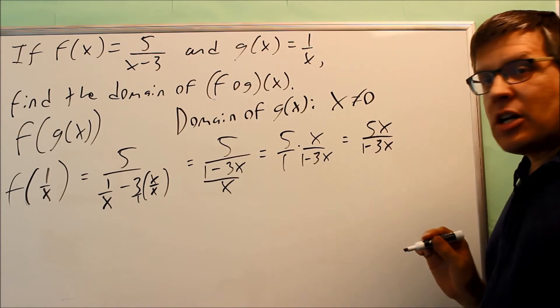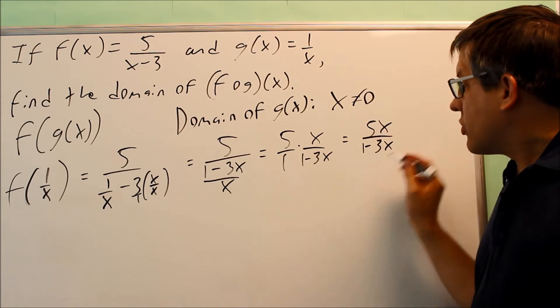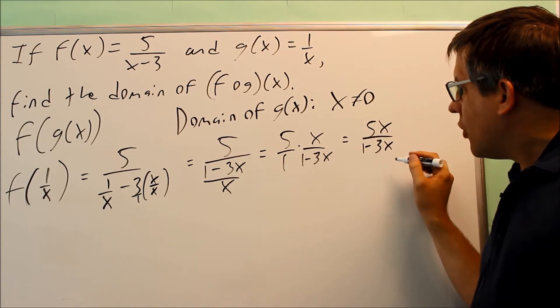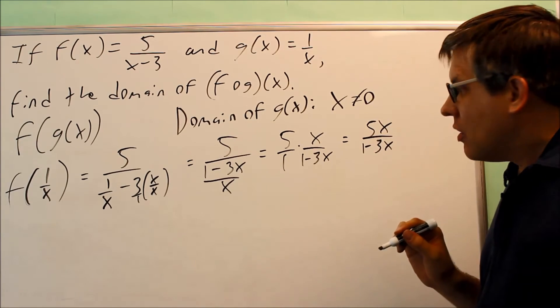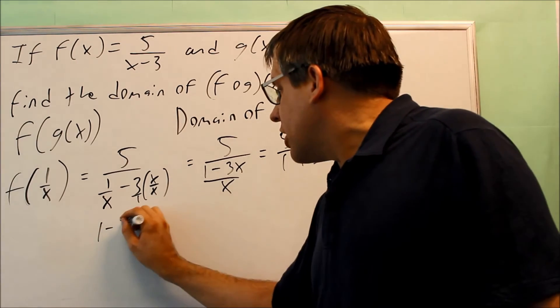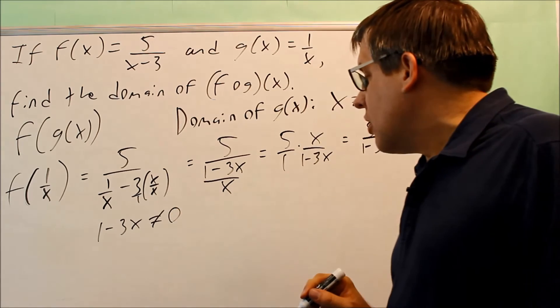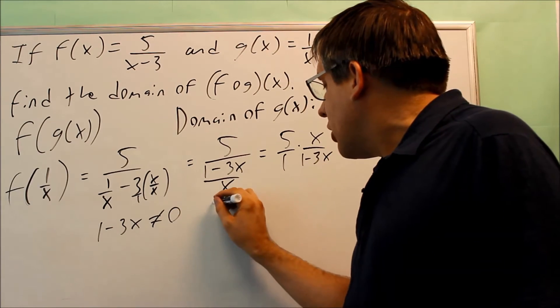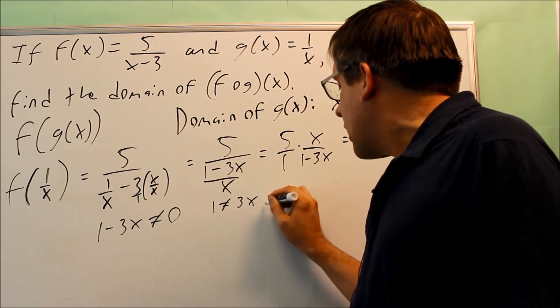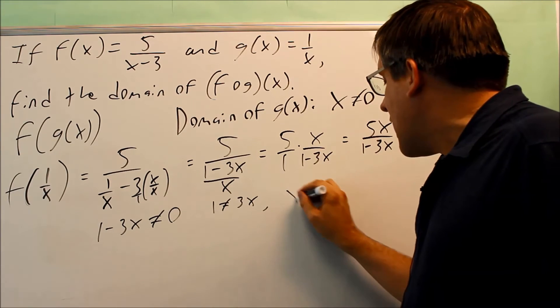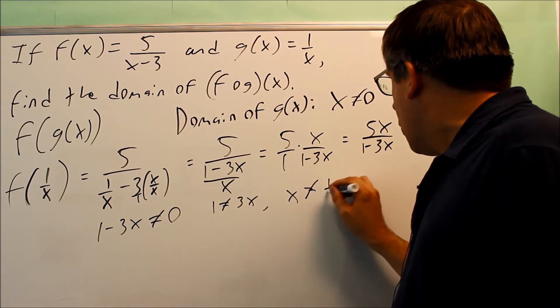So this bottom one, that bottom part is not allowed to be 0. So this is where we're going to look at the domain of the entire thing. So 1 minus 3x is not equal to 0. If you solve this, you get 1 is not equal to 3x. So you get that x is not equal to 1 third.